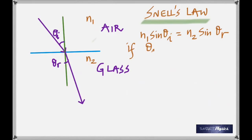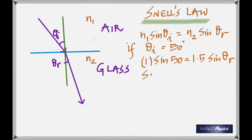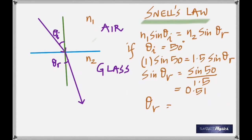Don't cram that formula — take it that: multiply the refractive index by the sine of the angle in that material. Let's do a problem. If theta i is 50 degrees, find theta r. N₁ = 1, so: 1 × sin 50 = 1.5 × sin θᵣ. Sin θᵣ = sin 50 / 1.5 = 0.51. Taking the inverse sine gives 30.71 degrees — proving that theta r is less than theta i, confirming the light bends towards the normal. That's Snell's law.